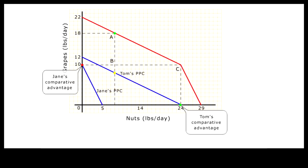Without foreign trade, the combined PPC represents the best possible combined output of grapes and nuts from Tom and Jane, with at least one of them specializing according to their comparative advantages.